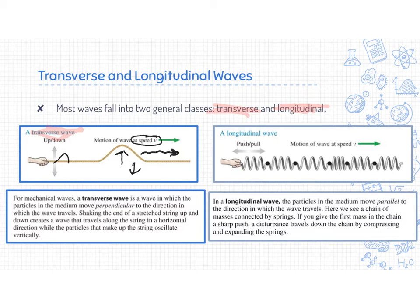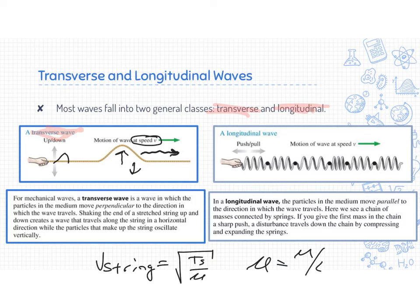We can actually quantify that. The velocity of a wave on a string — you don't need to know this — is the square root of the tension in the string divided by the linear mass density, where linear mass density is mass per unit length. The wave speed is defined by the tension and the thickness of the rope. A great example is guitar or any stringed instrument — violin, viola, cello, bass. They all use waves, oscillating up and down, and those waves resonate to make frequencies.